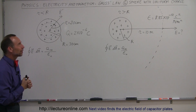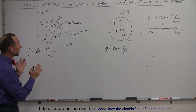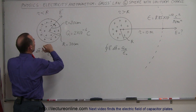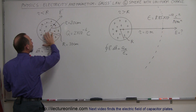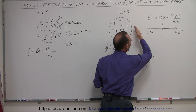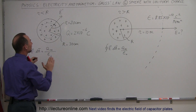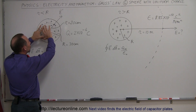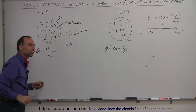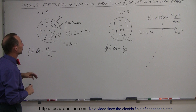Welcome to ElectronLine. Here we're going to use Gauss's law and the Gaussian surface to find the electric field inside a spherical object that has charge throughout the entire object. What's different here is that we don't have a conductor with charge on the surface — we have charge equally distributed everywhere inside the sphere.